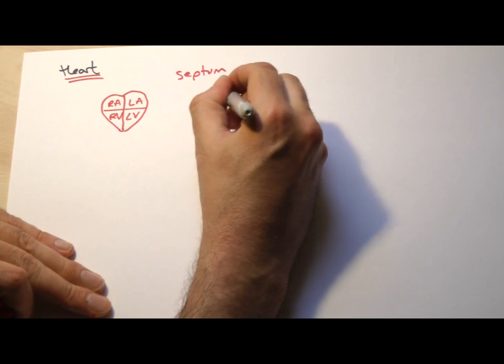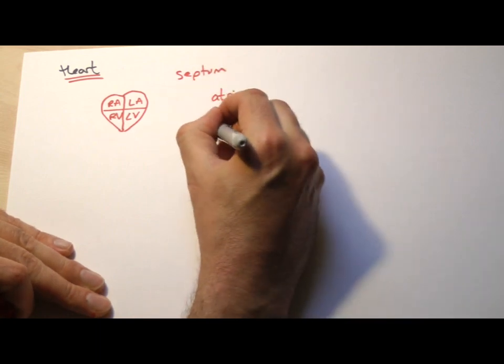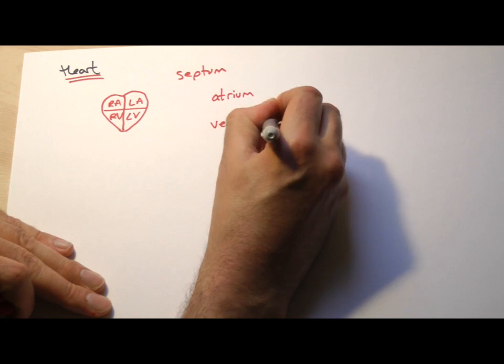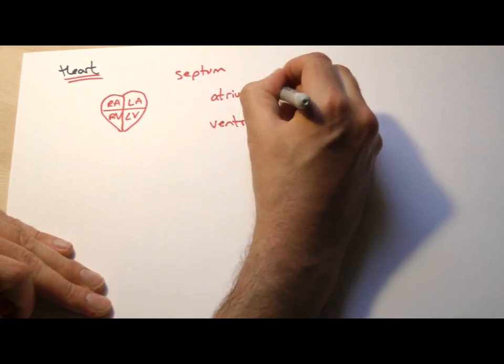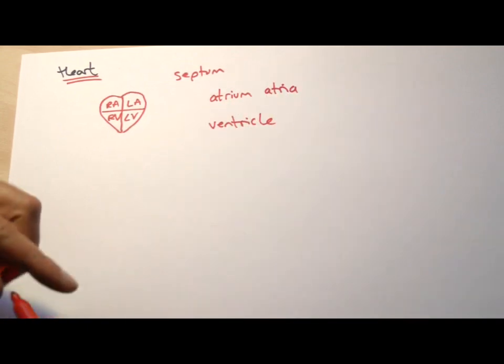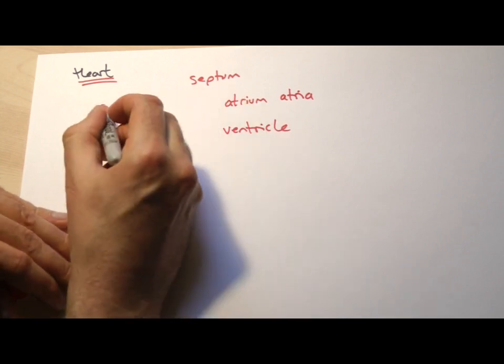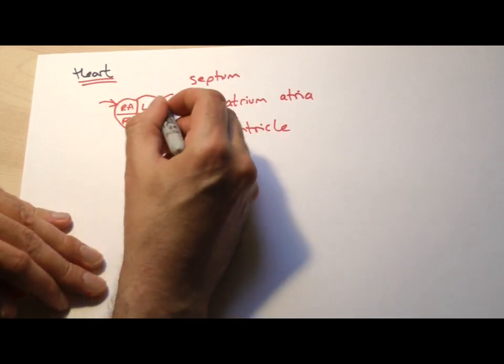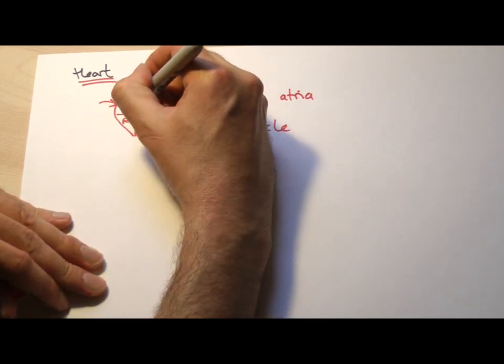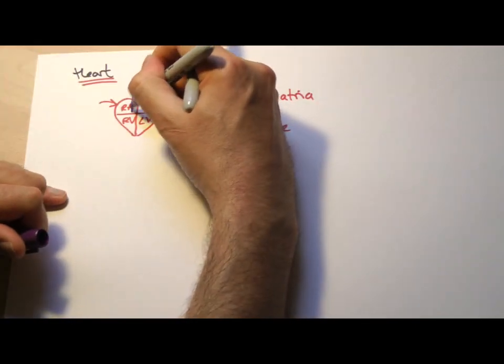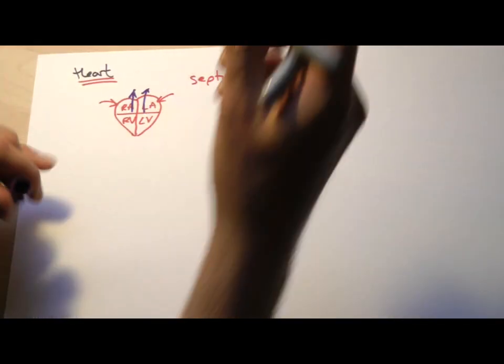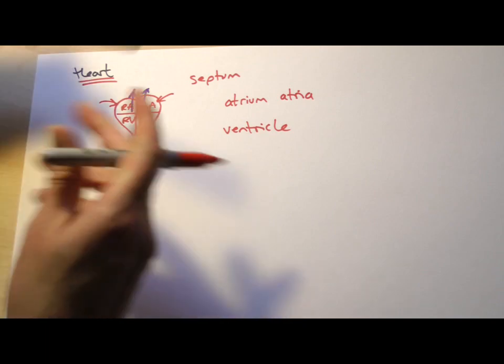So we've got the atrium, left atrium and the ventricle, pleural atrium is atria. And in very simple terms, blood goes into the atria and it's squeezed out from the ventricles. Okay, that's the simple version.